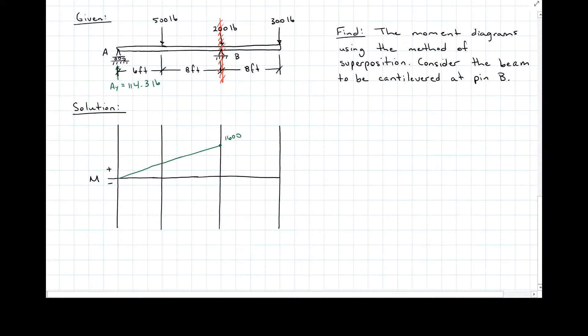And then I have my 500 pounds, it starts over here, 8 feet from B. It's acting down, so it's going to be a straight line down. 500 times 8 is 4000.